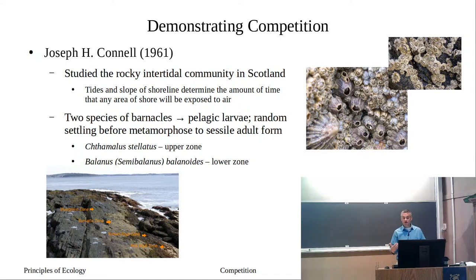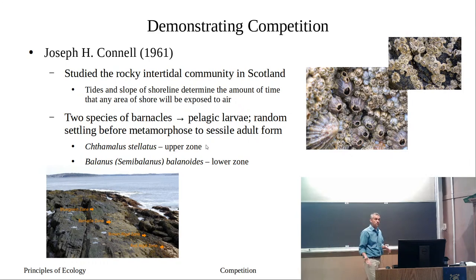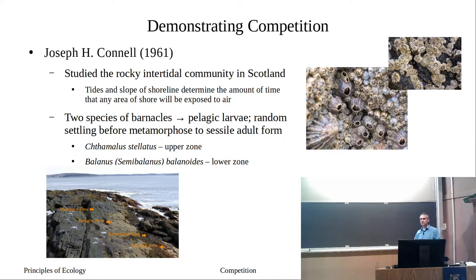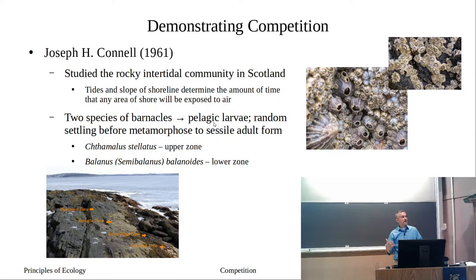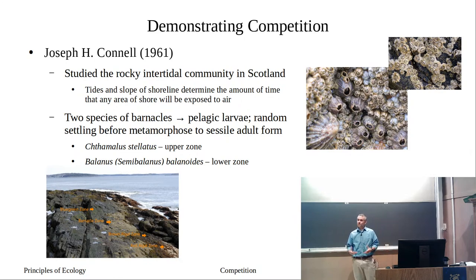The adults can't move — it's entirely determined by where the larvae fall. Of these two species, Chthamalus occurs in the upper tidal zone and Balanus is found in the lower zone. Connell asked: why are they separating? Is it due to the law of tolerance — physical, abiotic factors — or is this actually due to competition? Think about the pelagic larvae: there's no requirement about where they fall, so space might be a limiting resource for these two species.